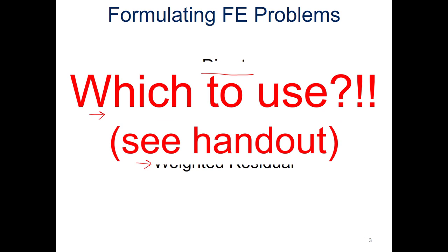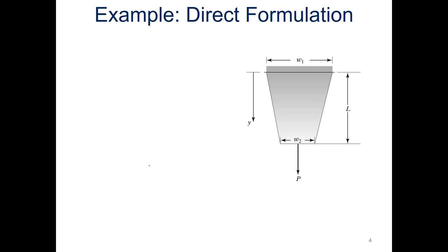Before we get too much further, make sure you check out the handout. For this whole presentation, as well as the next one on the minimum total potential energy, check out the link in the description where you can download the handout. In the end, I'll give you a little description about how you choose which formulation method, though a lot of that is beyond the scope of this class. But check it out to get an idea of how that would work when you get to industry and do some detailed formulations.